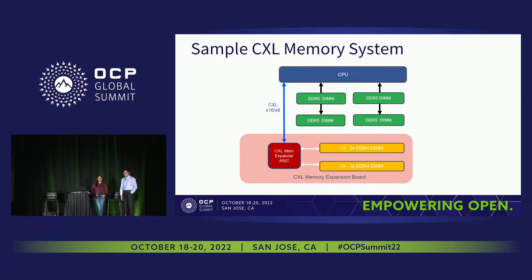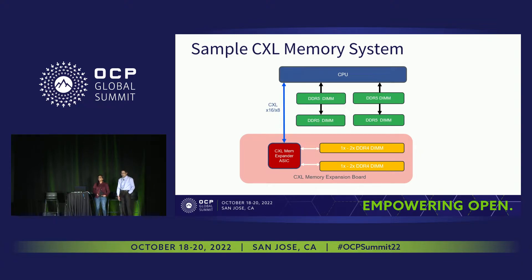This is a sample topology of a CXL memory system. You can see the CPU has the CXL root complex and locally attached memory. It connects to a CXL memory expansion board, which has a CXL memory expander ASIC containing logic for CXL and a memory controller, which then connects to the DDR media.